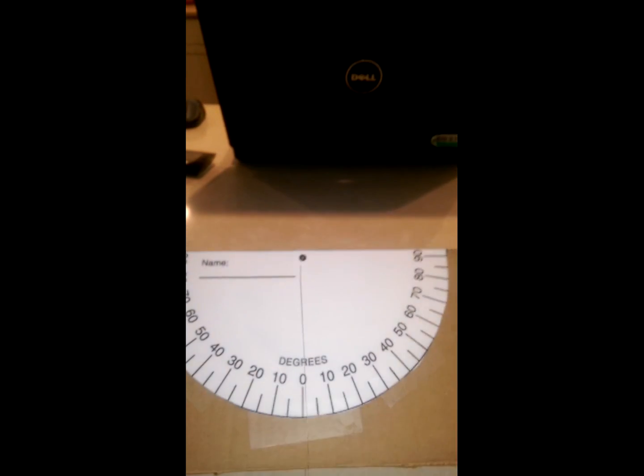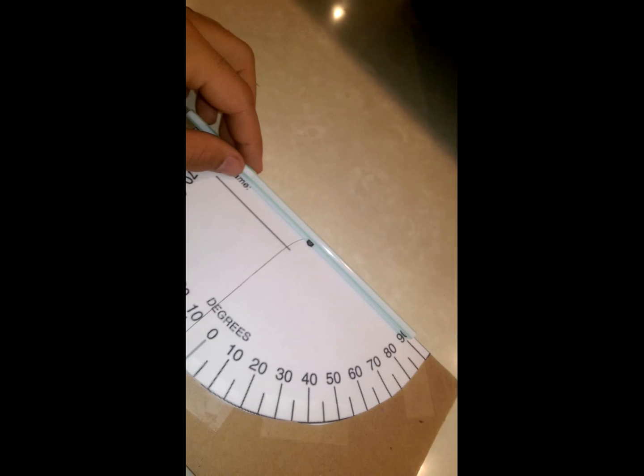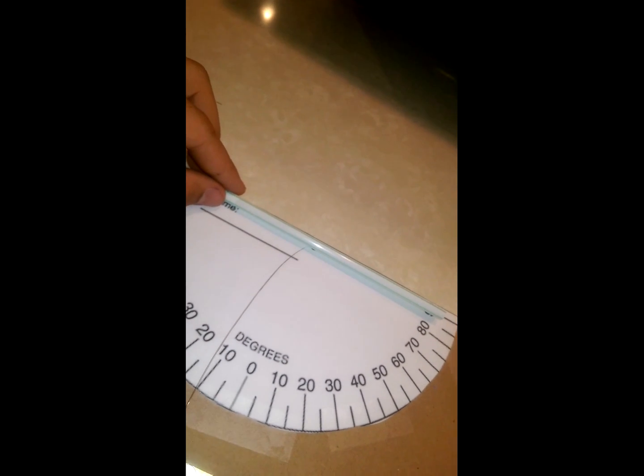The last step is we are going to tape this straw right over. You don't want to put it all the way up top. That would be a mistake. What we want is we want to put it right over the hole and even with the 90. I'm going to tape it right to there. We'll see how that goes.